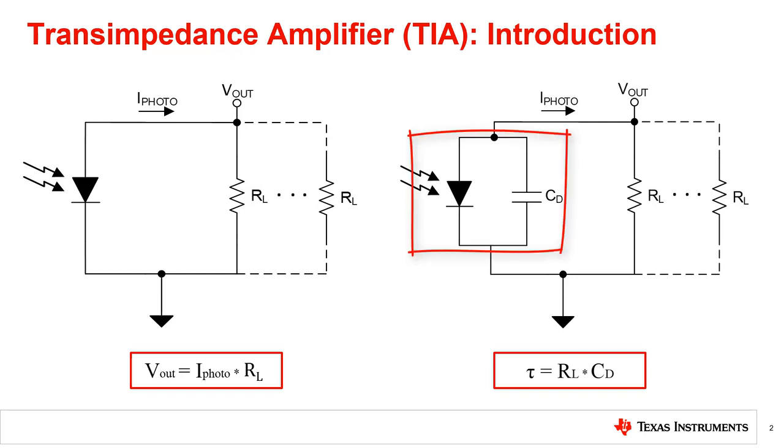With regards to the input, the current source in practice is not ideal. In many transimpedance applications, an optical sensor such as a photodiode is used, which introduces an input capacitance. This leads to another issue of slowing the signal response due to a large time constant created by the resistor and the capacitor in high gain designs.